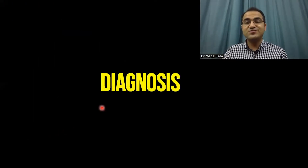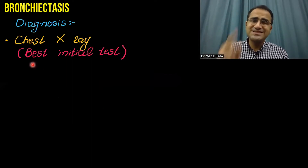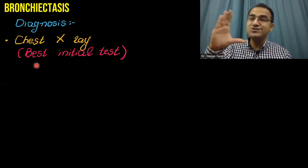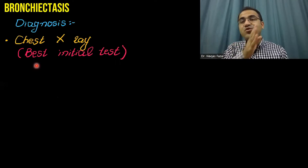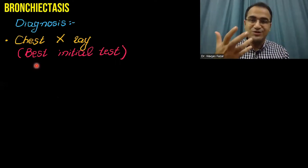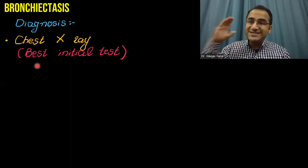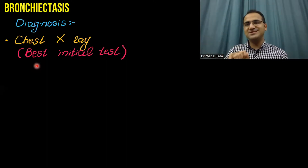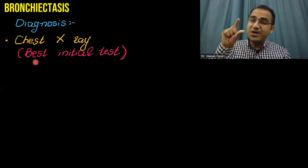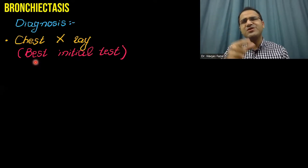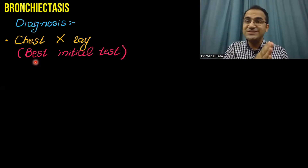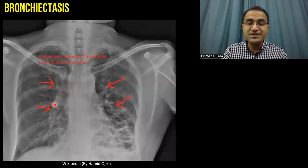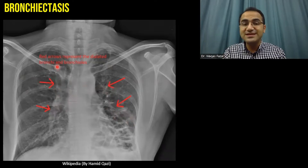For the diagnosis of bronchiectasis, remember that chest X-ray is the best initial test. Although chest X-ray is not specific and does not confirm the diagnosis, it can help rule out many other causes of excess mucus production. A sensitive test is used initially because it rules out many diseases. This picture shows a chest X-ray with dilated bronchi visible.